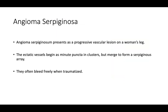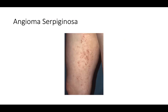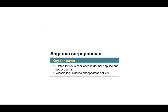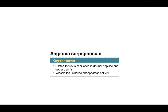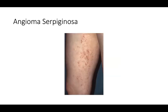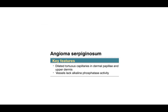Moving on to angioma serpiginosa, which presents as a progressive vascular lesion, often on the leg of females. The ectatic vessels begin as minute puncta in clusters but merge to form a serpiginous array. They often bleed freely when traumatized. Key histopathology features include dilated tortuous capillaries in the dermal papillae and upper dermis; the vessels lack alkaline phosphatase activity. You can see dilated vessels in the superficial dermis that are not as filled with blood as in angiokeratoma — they appear embedded a bit deeper under the epidermis.